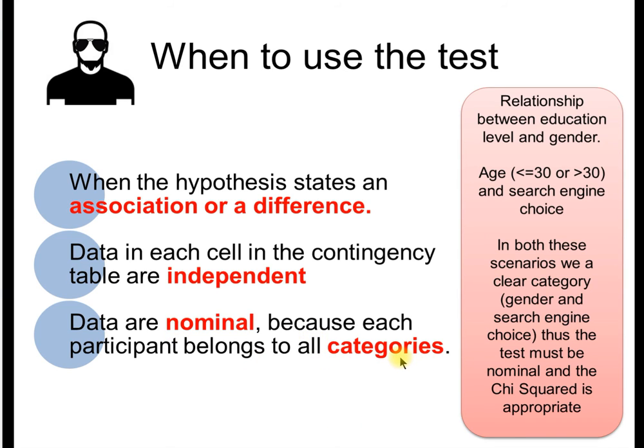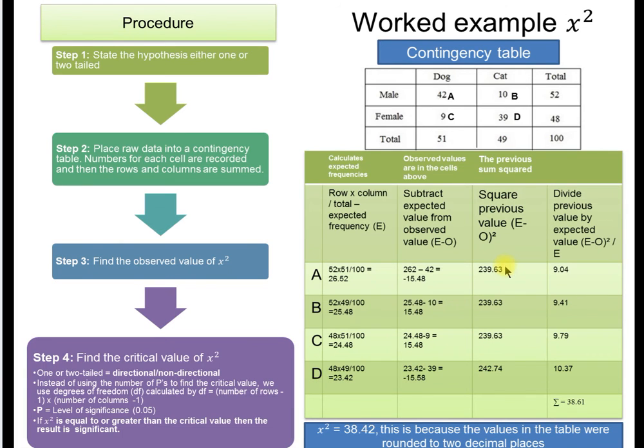Each participant belongs to all the categories. Relationship between education level and gender. We take something like age. We could turn it into categorical data by saying you're either less than or equal to 30 years old or greater than. Favorite search engine. That's probably going back a bit, but Google or Bing. These are categories. Nominal data.